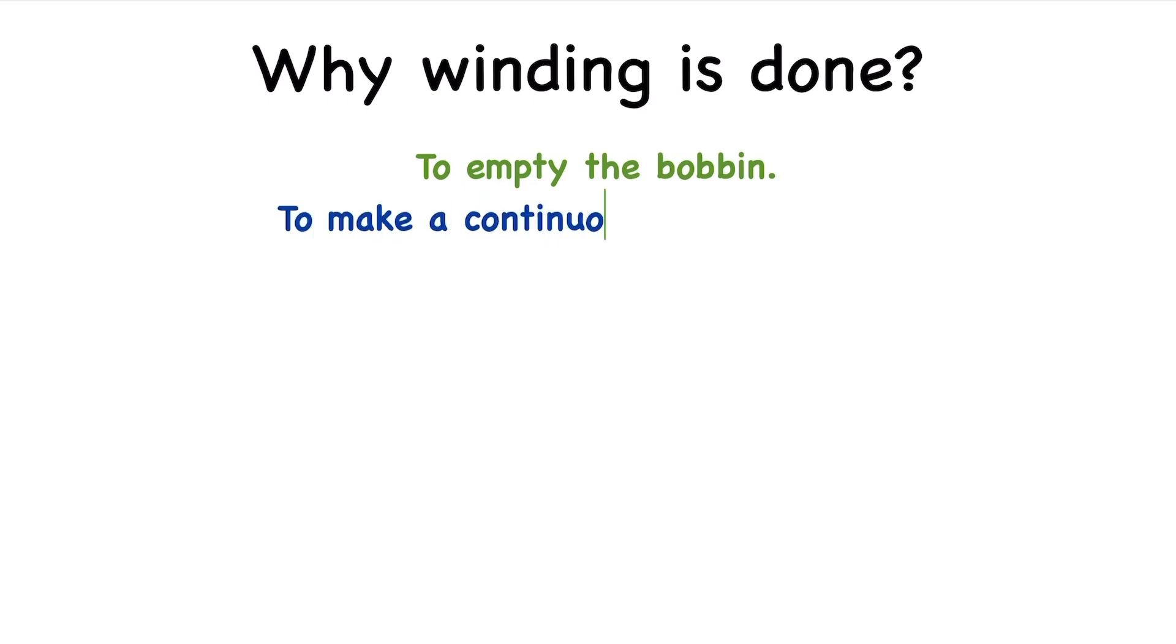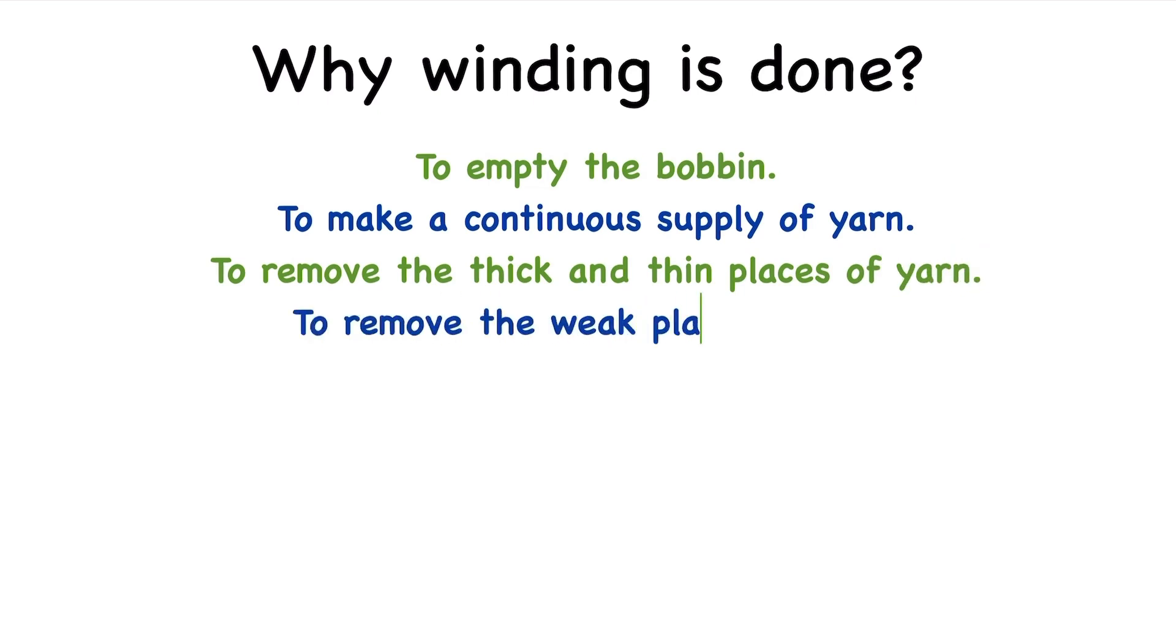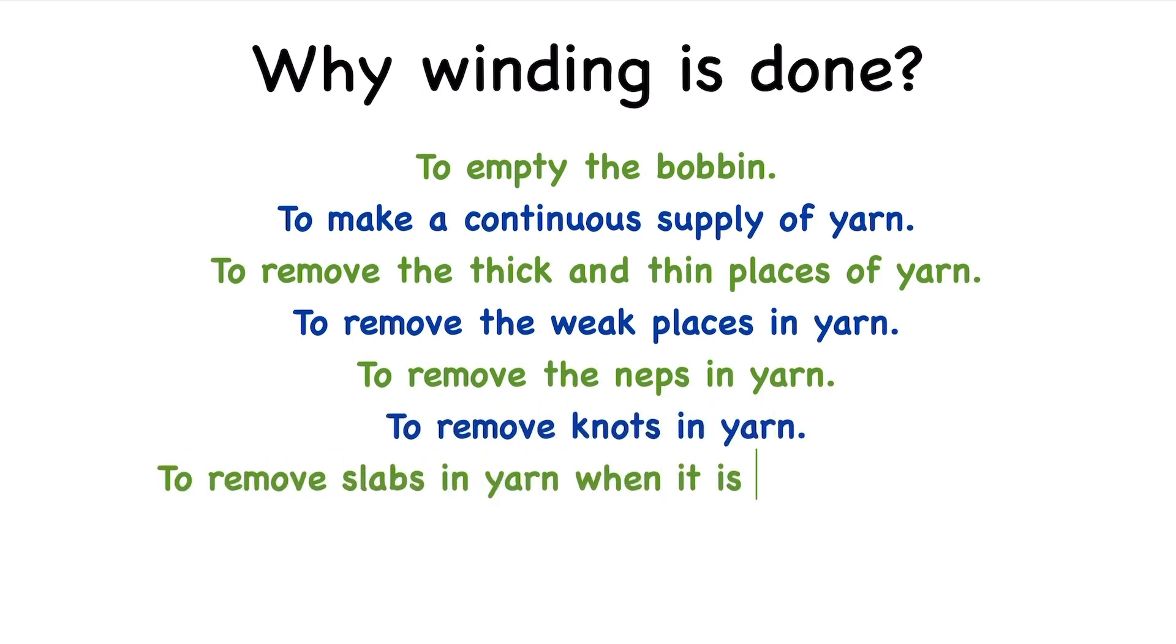Winding is done to: empty the bobbin, make a continuous supply of yarn, remove the thick and thin places of yarn, remove the weak places in yarn, remove the neps in yarn, remove knots in yarn, and remove slabs in yarn when it is not required for decoration, not done in case of slab yarn.